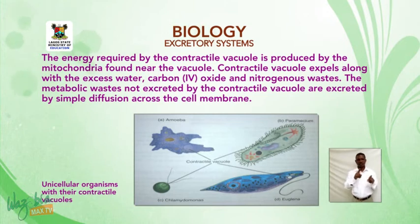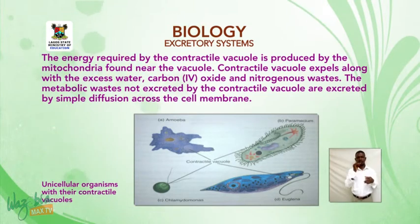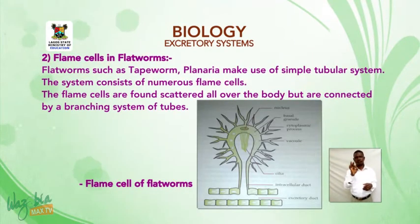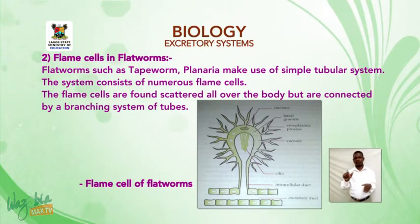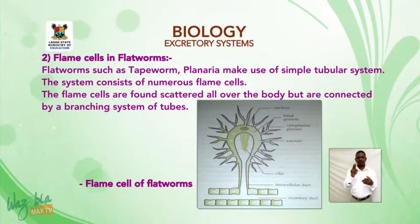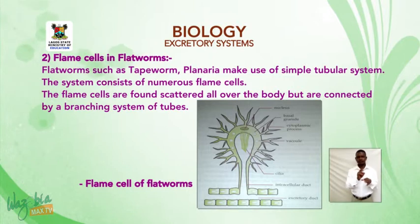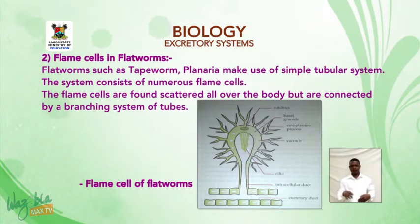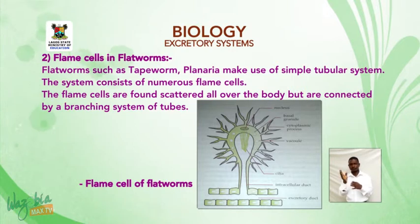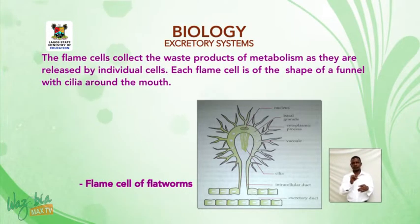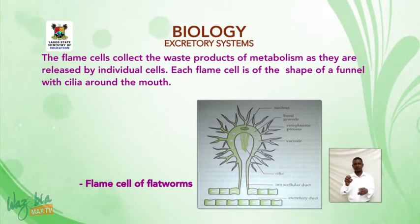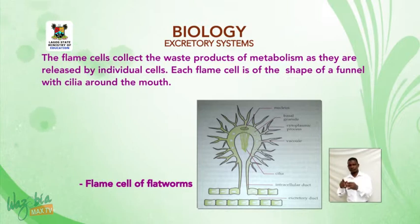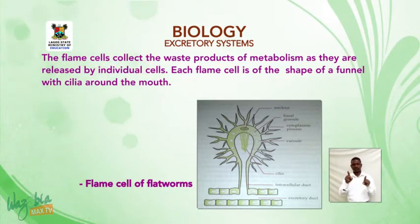In flatworms such as tapeworm and planaria, excretion makes use of a simple tubular system consisting of numerous flame cells. These flame cells are scattered all over the body but are connected by a branching system of tubes. The flame cells collect waste products of metabolism as they are released by individual cells.